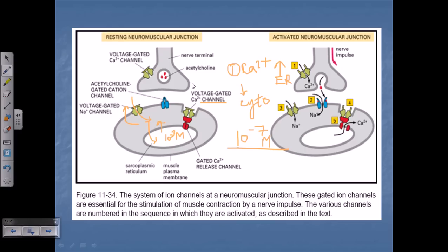Looking at the neuromuscular junction: when there is a resting potential with no action potential change, there are vesicles containing acetylcholine in the nerve terminal, and voltage-gated channels on both the nerve terminal and the muscle layer. The nerve terminal has voltage-gated calcium channels, and the muscle cell also has voltage-gated calcium channels as well as voltage-gated sodium channels.